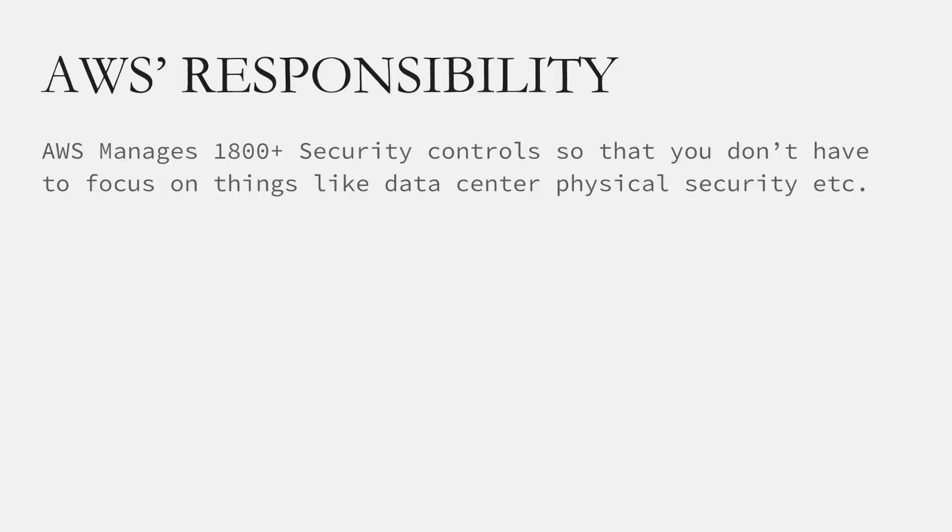AWS manages more than 1,800 security controls so that you don't have to focus on those things. They take care of the physical security of the data center — CCTV cameras and protection against interference by bad actors — so that they don't steal the data.